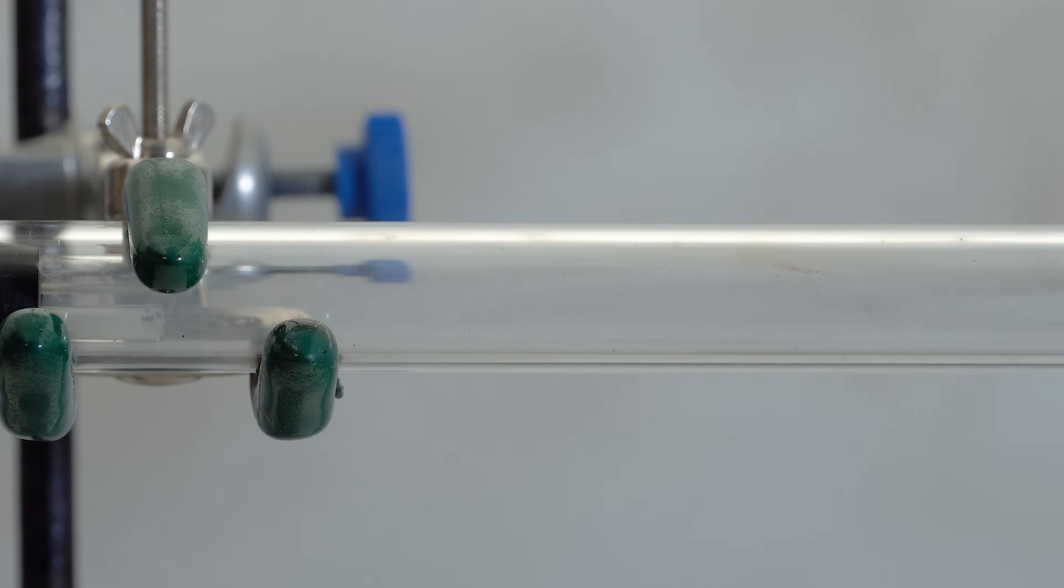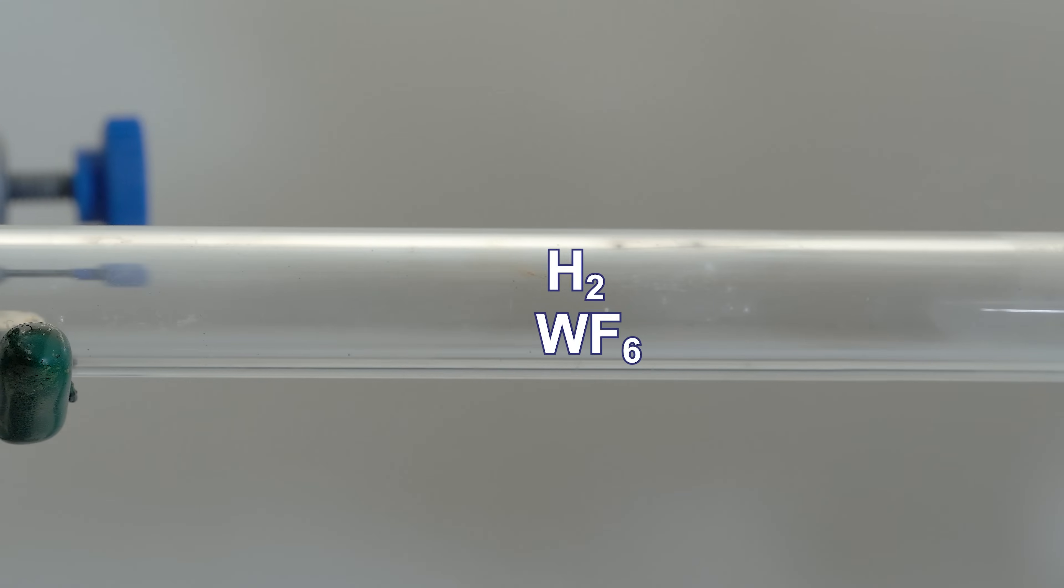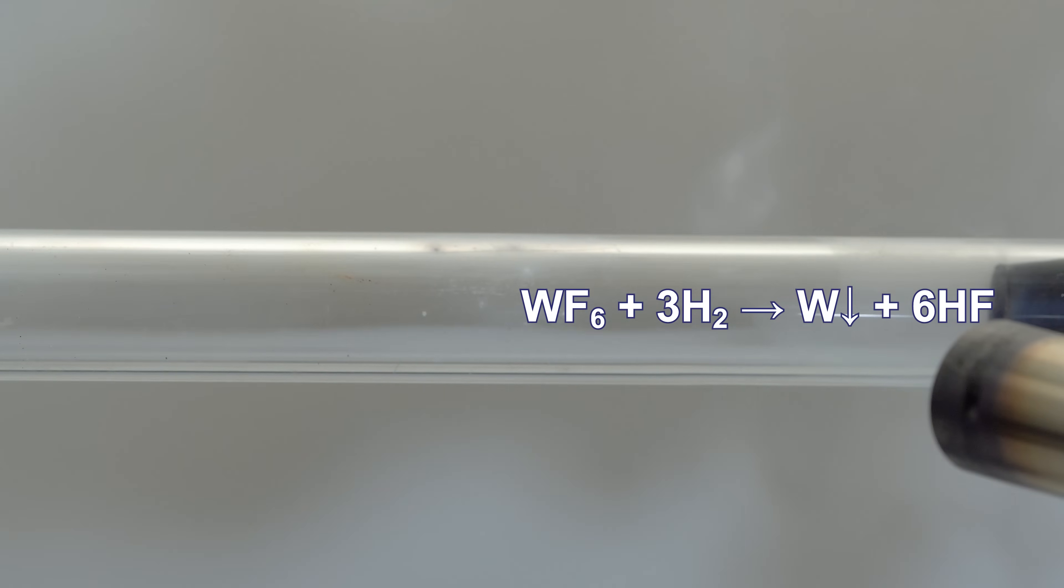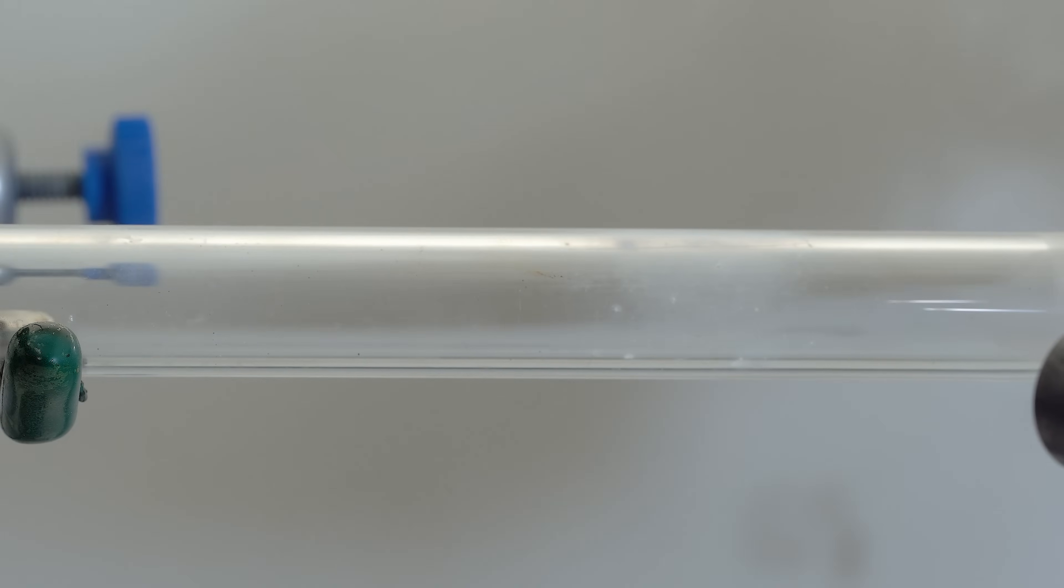Now I turn on the current of tungsten hexafluoride and strongly heat only a small part of the quartz tube with my butane torch. It's in this heated section above 500 degrees Celsius that pure tungsten begins to precipitate, forming a layer of metallic mirror.